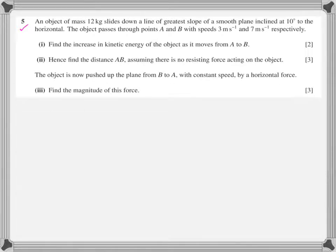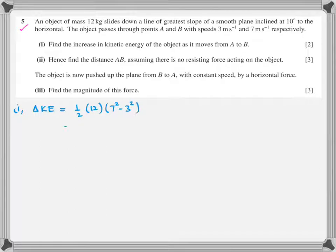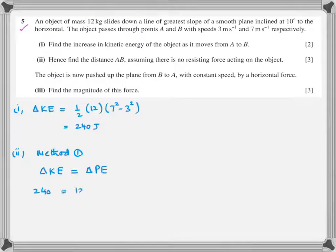Part one: find the increase in kinetic energy — that's simply ½mv² − ½mu² = ½ × 12 × (7² − 3²) = 240 joules. Part two: find the distance AB assuming no resisting force. Method one: change in kinetic energy equals change in potential energy. Change in KE is already known. Change in potential is mgh or mg sin θ × distance along the plane. That distance comes out to be 11.5 meters.